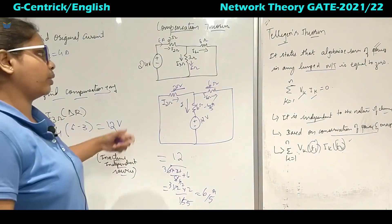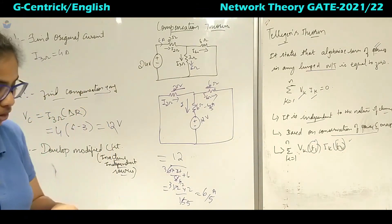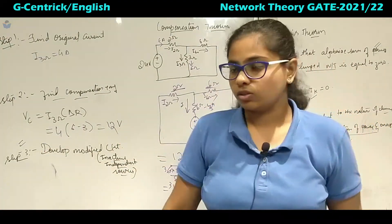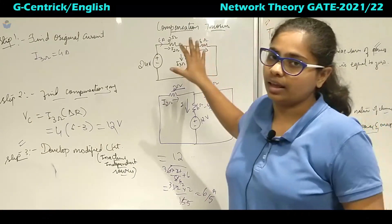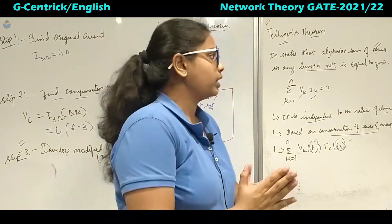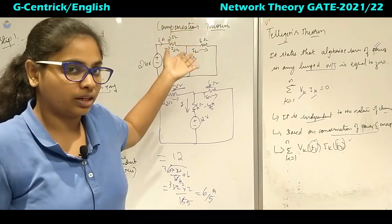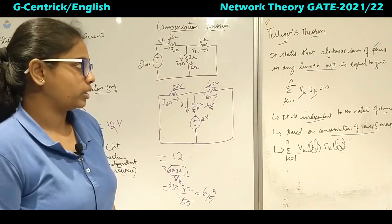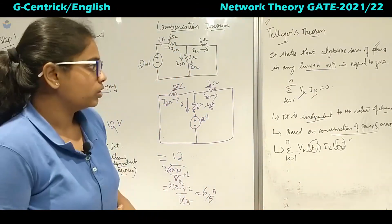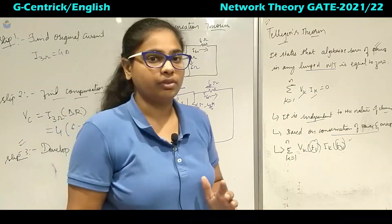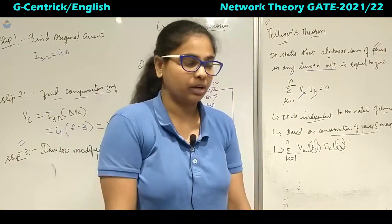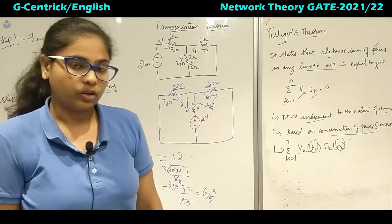The compensation theorem is not much more useful than nodal analysis for such problems. This completes Unit 10 on network theorems. The most important theorems are superposition, Thevenin, Norton, maximum power transfer, and to some extent the reciprocity theorem. In the next lecture, we will start transient analysis, which is a very important part of network theory. Thank you.